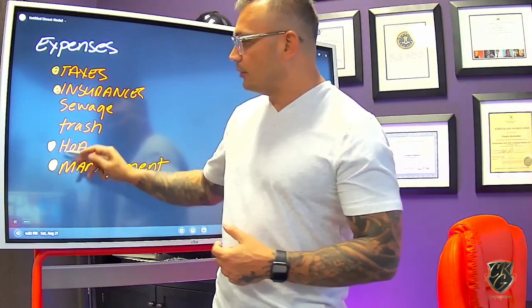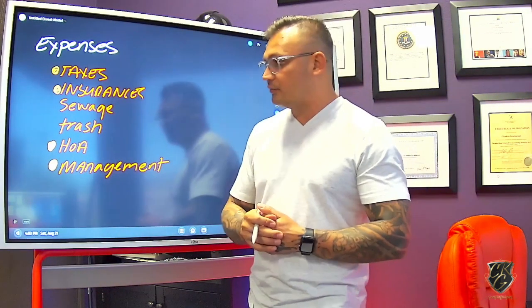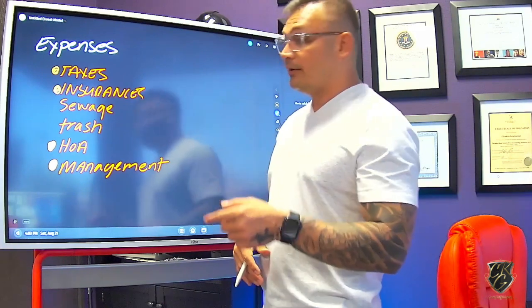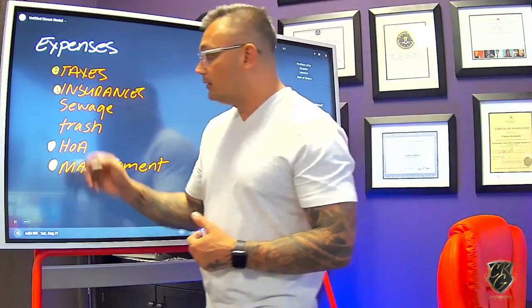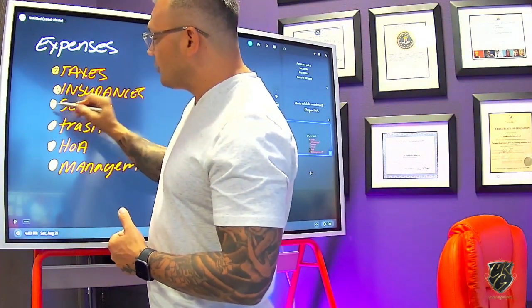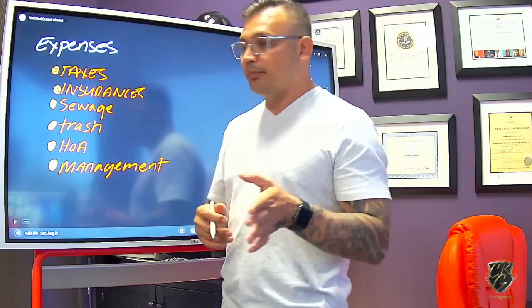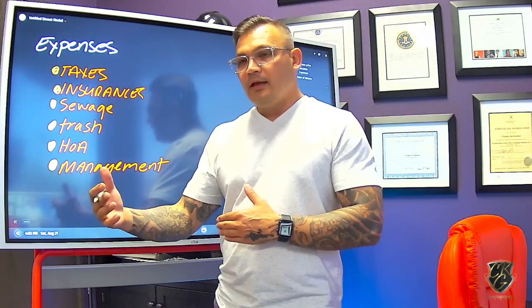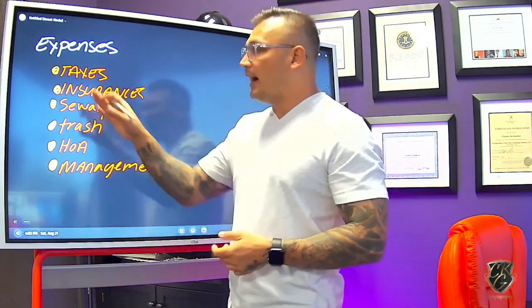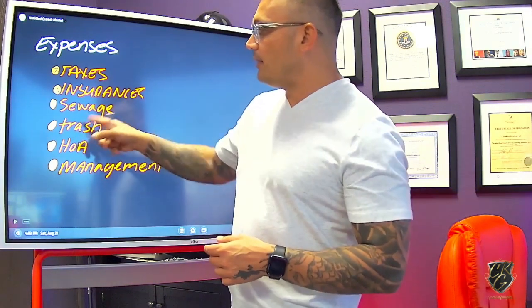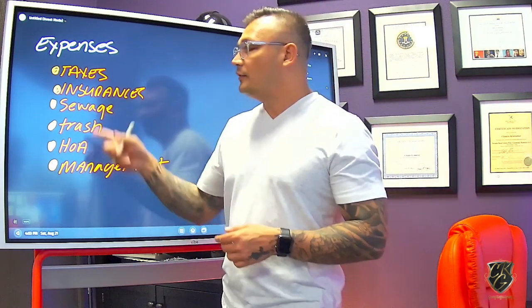A lot of homes here in Vegas will have an HOA, so we need to figure out that expense as well. Keep in mind: if you buy an investment property here in Las Vegas, make sure to read the HOA resale package because some places may not allow you to rent out the property. You also have trash and sewage, typically due every quarter. Depending on the state, these are actually voluntary liens against your property. Some landlords pass that fee to the tenant, but I never do that because if you don't make these payments they can literally foreclose on you — so I just increase the rents instead.